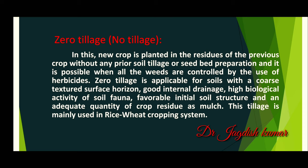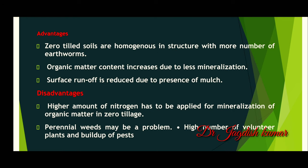Zero tillage is mainly used in the rice-wheat cropping system. The advantages of zero tillage are: 1. Zero till soils are homogeneous in infrastructure with more number of earthworms. 2. Organic matter content increases due to less mineralization. 3. Surface runoff is reduced due to the presence of mulch. The disadvantages of zero tillage are: 1. A higher amount of nitrogen has to be applied for mineralization of organic matter. 2. Perennial weeds may be a problem. 3. High number of volunteer plants and build-up of pests.